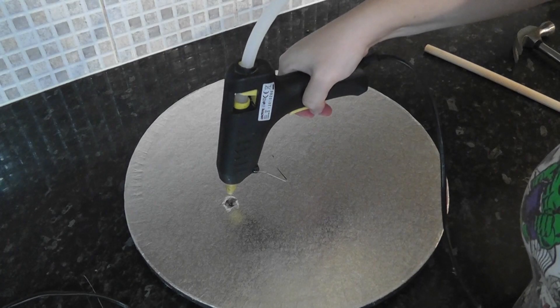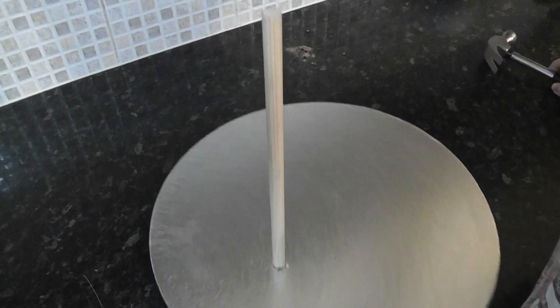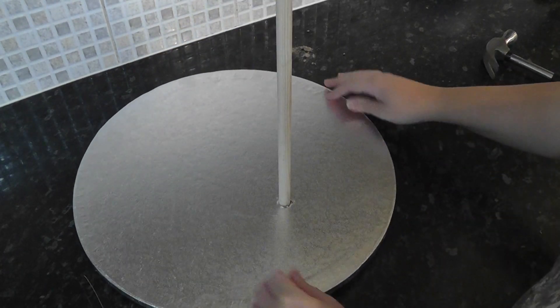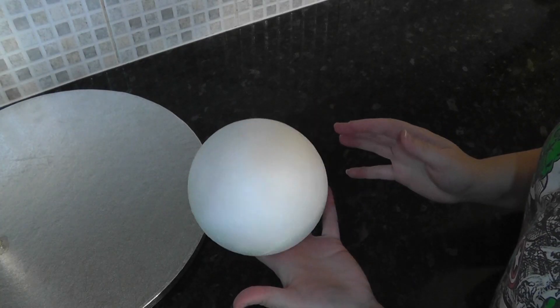Now add hot glue inside the hole and hammer your dowel down into it, making sure it's as straight as you can get it. Then add some hot glue around the base of the dowel.